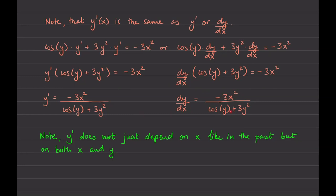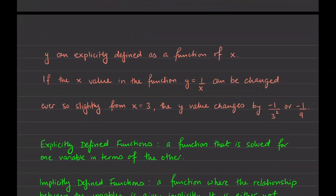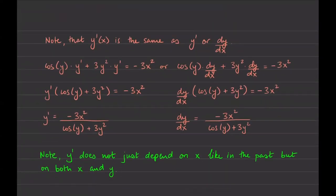Notice here that the derivative does not just depend on the x variable — it depends on both x and y. We have to know both the x coordinate and the y coordinate at the point where we're finding the derivative. Historically we haven't needed that because all functions differentiated in the past were explicitly defined functions, where dy/dx only depends on x. For an explicitly defined function, if I want dy/dx at x equals 5, I just plug in 5. But for an implicitly defined function, I need both x and y coordinates.